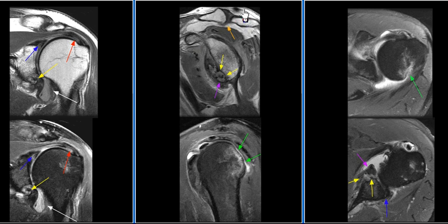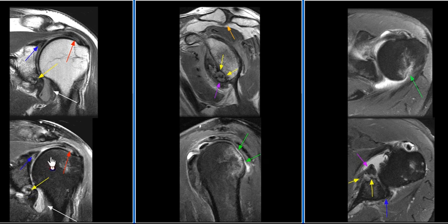Mild hypertrophic changes are seen in the acromioclavicular joint with a type 2 acromion. MR findings are consistent with a Bony Bankart lesion associated with a Hill-Sachs lesion and labral tear.